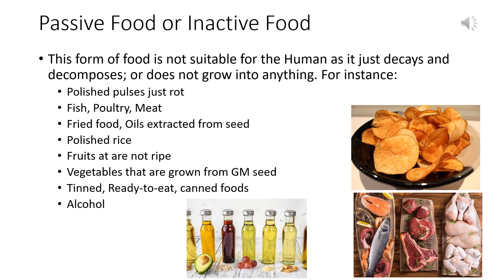Oils extracted from seeds — if you soak groundnuts in water and leave them, they sprout. But if you extract oil from that, that oil doesn't do any good, so that oil is not okay. Polished rice. Fruits that are not ripe. Vegetables grown from GM seeds, because the seeds inside those vegetables don't sprout again. Tinned, ready-to-eat, and canned foods are totally passive foods. Alcohol, cold drinks, and juices are all absolutely passive foods and bad for human health.